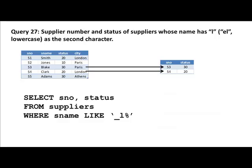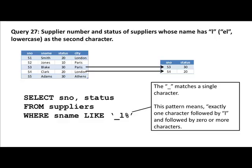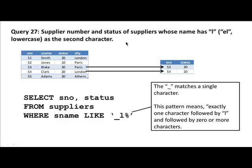The underscore matches exactly one single character. So if you have a supplier whose name is Al, that will match; a supplier whose name is Blake, that will match — because Al has A appearing before the L, Blake has B appearing before the L. Now give me the part number and color for parts whose names start with an uppercase C. Please pause the video, write down your answer, then proceed.